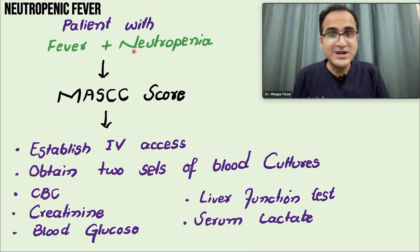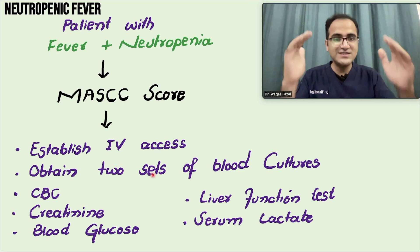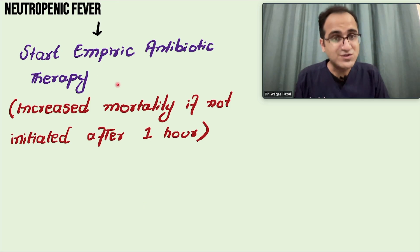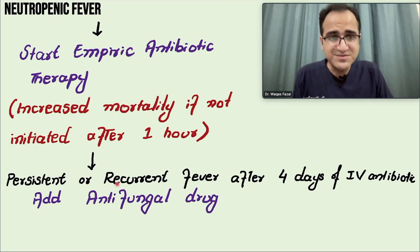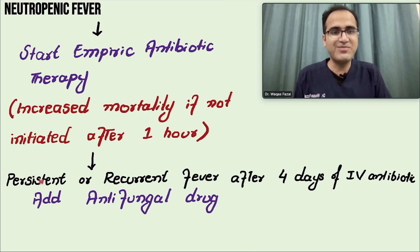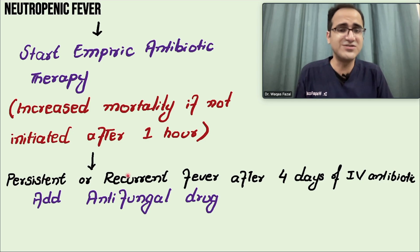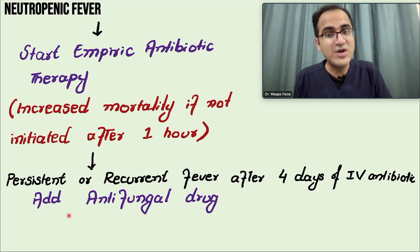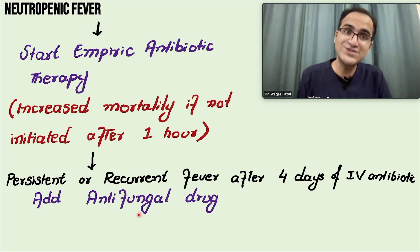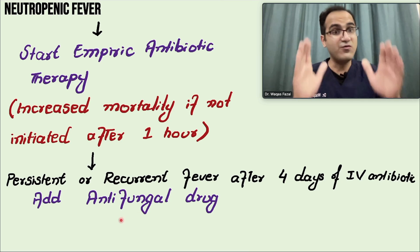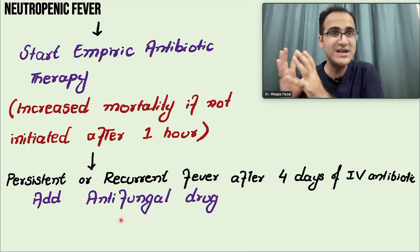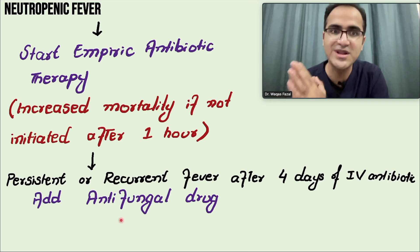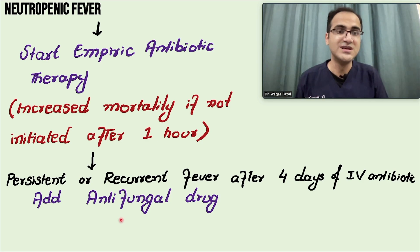To summarize so far: the patient presents with fever and neutropenia, you calculate the MASCC score, take blood samples, stratify as high or low risk, then start empiric antibiotic therapy within one hour. If the fever does not subside — persistent or recurrent fever after day four of IV antibiotics — this is concerning. The next step is to add antifungal therapy, because if strong antibiotics are not working, it may be a fungal infection causing the problem.